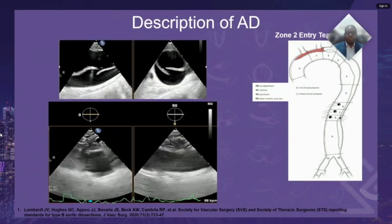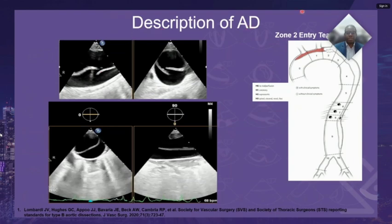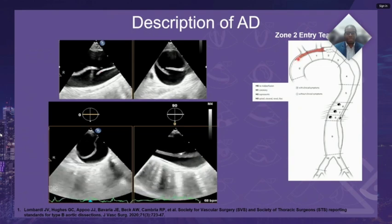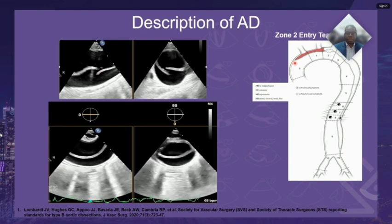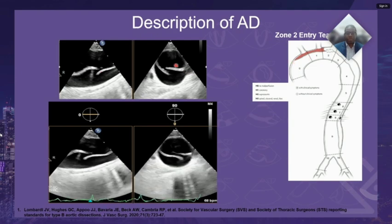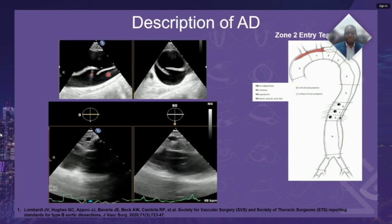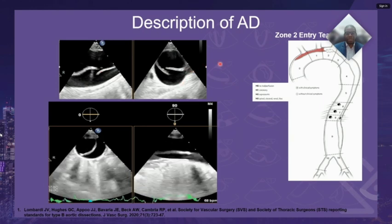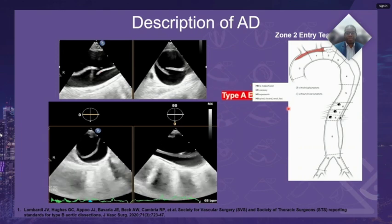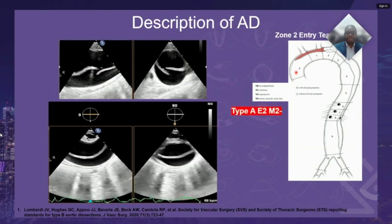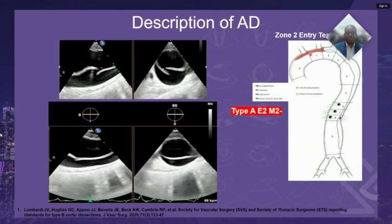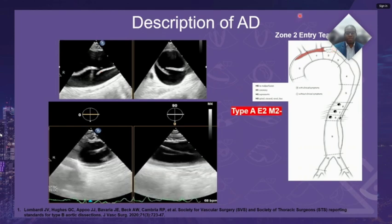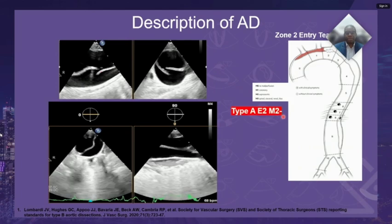An example of a description of an aortic dissection flap is seen here, where the aortic dissection flap extends into the ascending aorta, but the entry tear was noted to occur just in the distal arch in the region of Zone 2, and was also found to extend up into the left subclavian artery. In that context, this dissection flap can be described as type A with extension in the ascending aorta, entry point 2 (E2), and M2 because it involved the supra-aortic vessels, but M2- as the patient had no clinical symptoms.